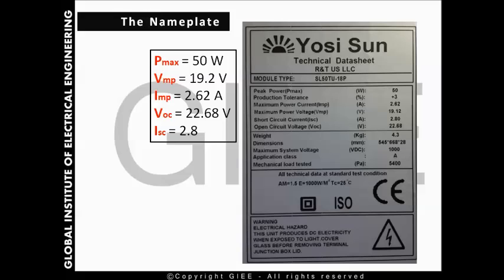First, the peak power, which is the maximum power, is 50 watts. We have the maximum power current of 2.62 amps, the maximum power voltage of 19.12 volts, the short circuit current of 2.8 amps, and the open circuit voltage of 22.68 volts. We have to know that these values were measured at the Standard Test Condition.